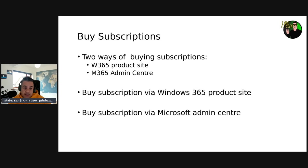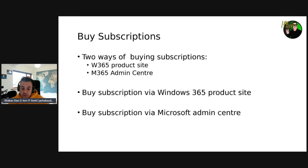There are two ways to buy a Windows 365 subscription: through the Windows 365 product site, or through the admin center, which is what we'll do in the demo. After buying, you use the admin center to assign the license. On the product site, you find the subscription type you want and pay by credit card. Via the admin center, you need to ensure you have at least Billing Admin or Global Admin permissions.